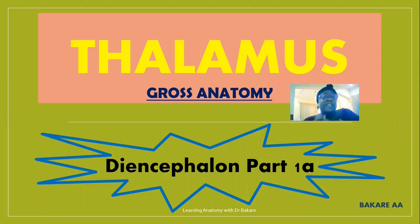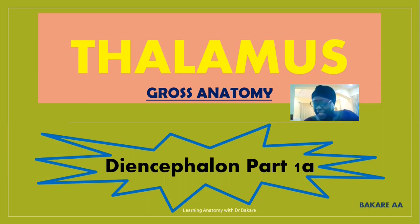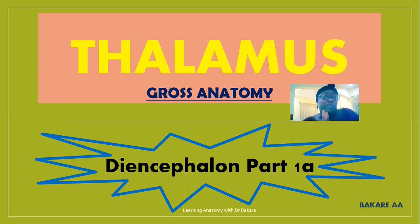Welcome back. In this lecture we'll be looking at the gross anatomy of the thalamus. I've done a lecture on the diencephalon where I describe the thalamus as one of the structural components of the diencephalon — if you've not checked that lecture, please go and view it first. Here we'll be limiting this to just the gross anatomy of the thalamus, covering its general structural configuration, its relations, and its blood supply.